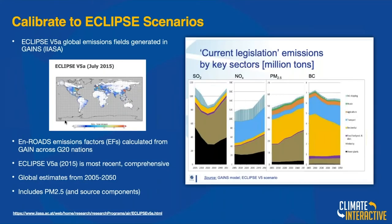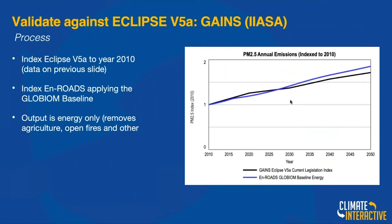Eclipse is one of the models we compared against. The third graph is PM2.5 — it rises from 2000 up to the future. We took that line and ran ours against theirs to see how we did. You can see our comparison: GAINS Eclipse scenario here as an index, and En-ROADS here. We're close-ish and that builds our confidence. That's how we build our confidence in the model.